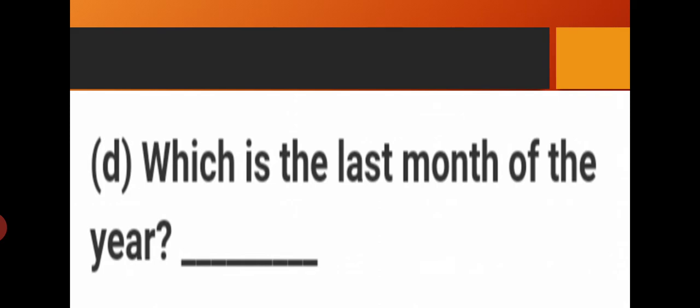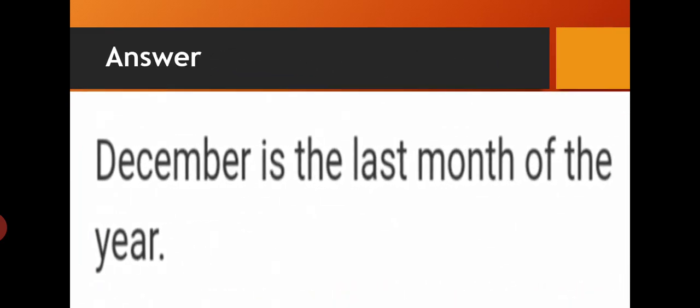Eleventh month November, and twelfth month December. So total there are twelve months. First month of the year is January, and last month of the year is December. So the answer is: which is the last month of the year? December is the last month of the year. Check the spelling: D-E-C-E-M-B-E-R.